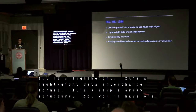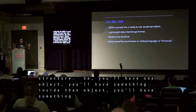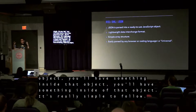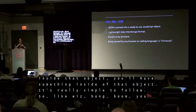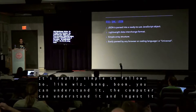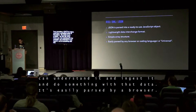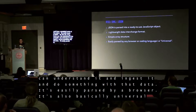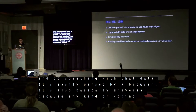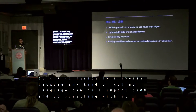It's a simple array structure. You'll have one object, and things nested inside of that object — it's really simple to follow. You understand it, the computer can understand it, it can ingest it and do something with that data. It's easily parsed by a browser, and it's basically universal because any coding language can just import JSON and do something with it.